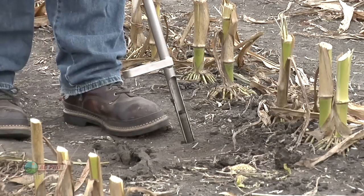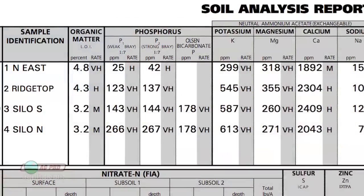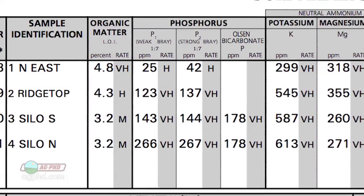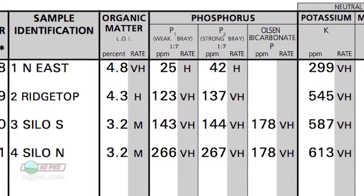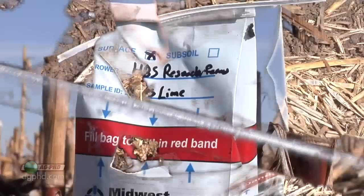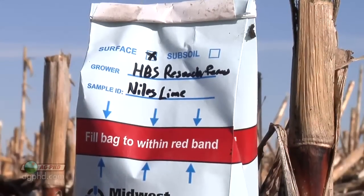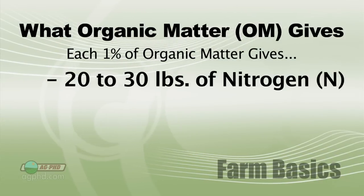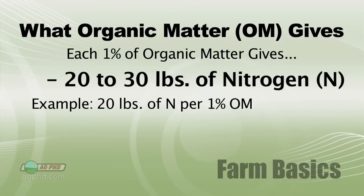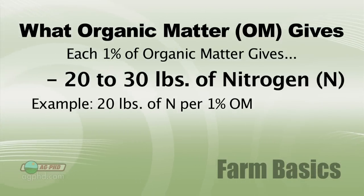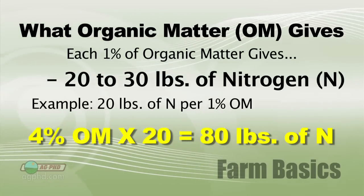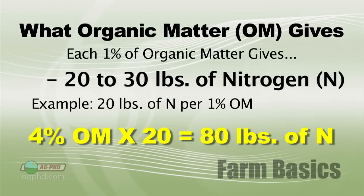Farmers will figure how much organic matter they have in their soils. Midwest soils often have somewhere between 2 and 4%, but it can range from a half percent to 7 or 8%. Farmers take soil tests to find out their organic matter levels. With nitrogen, for example, at 20 to 30 pounds per percent of organic matter, most farmers will use the conservative figure of 20 pounds per 1%. So if a field has 4% organic matter, that's 4 times 20 — 80 pounds of nitrogen that come for free during the season.